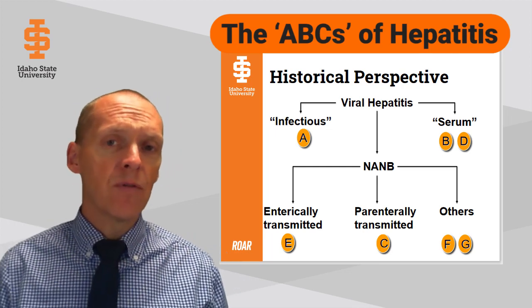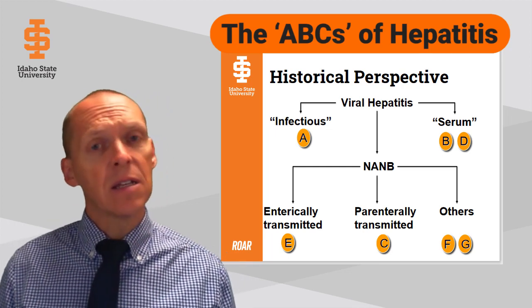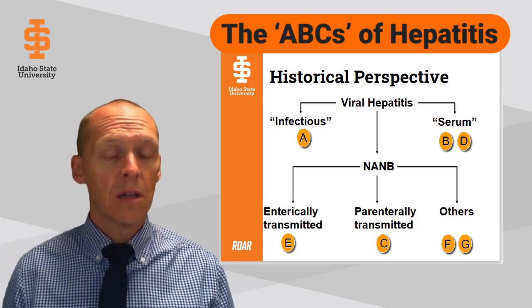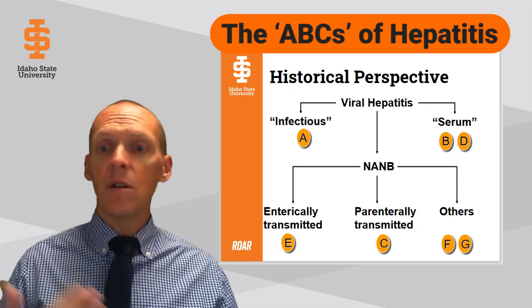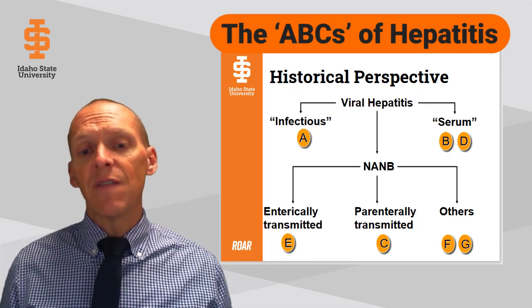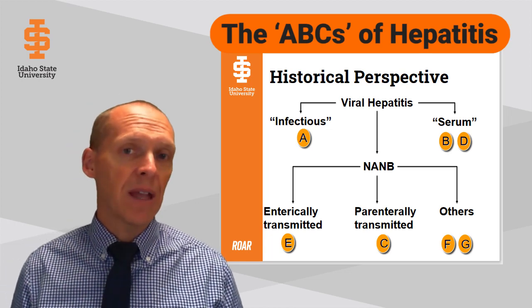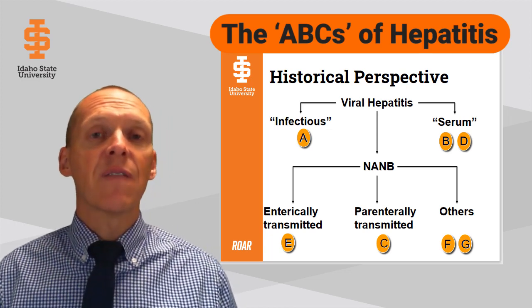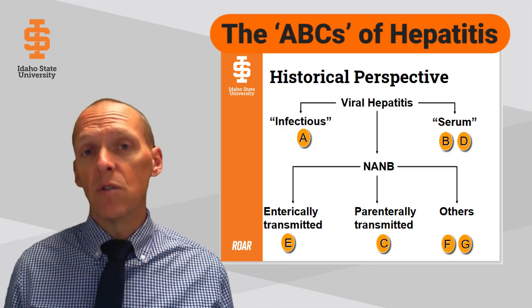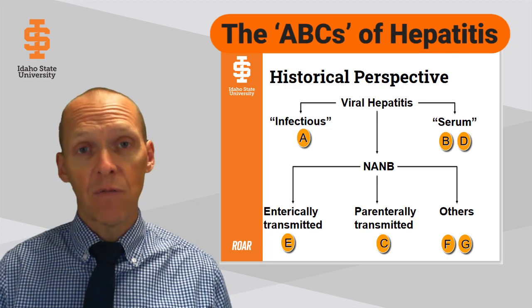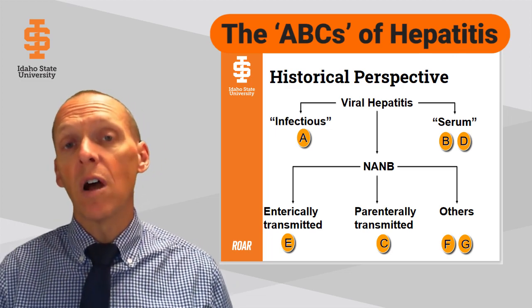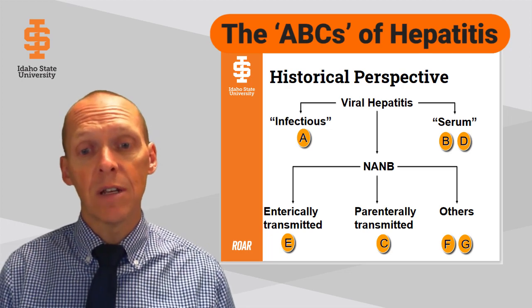You will also see some hepatitis D or delta referred to in the literature. And then for a long time through the 70s and 80s, there was what was referred to as non-A, non-B hepatitis. We knew it wasn't hepatitis A, we knew it wasn't hepatitis B, but we didn't know what it was. It was eventually identified primarily in the U.S. as hepatitis C, and it was identified as being transmitted primarily parenterally, also through blood transfusions several decades ago. And because of that, that was a major mode of transmission before blood supply was being screened.